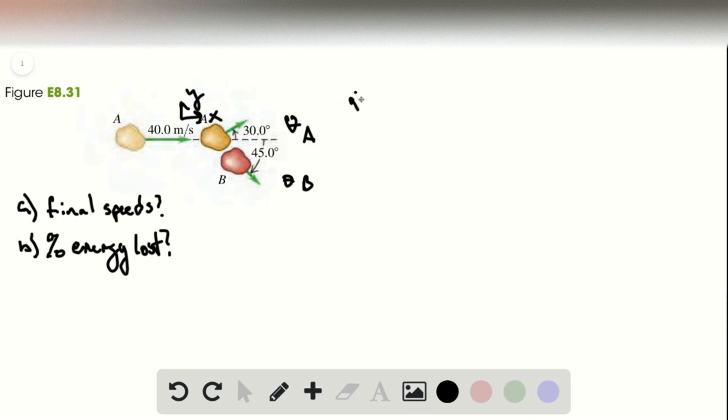So because we're not told of any forces acting external to the asteroids, or any forces that there are are negligible because this is in the asteroid belt where everything is very far apart for the most part, the momentum in both of these directions is going to be conserved. So let's write down what we have for the x-direction first.